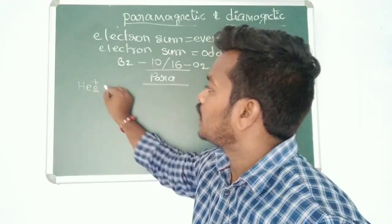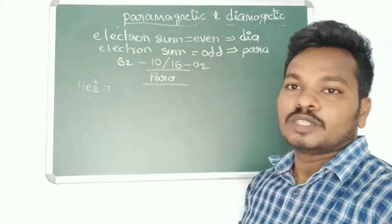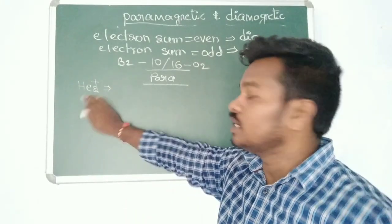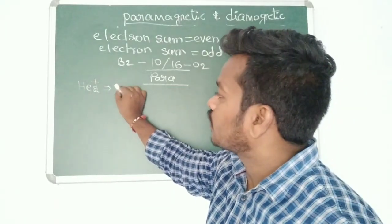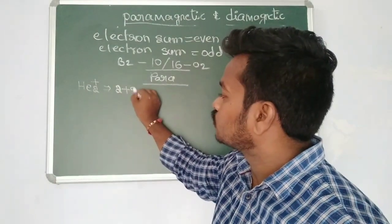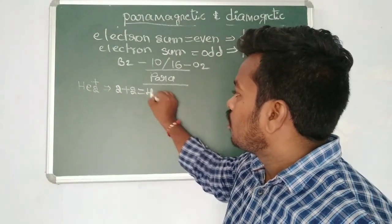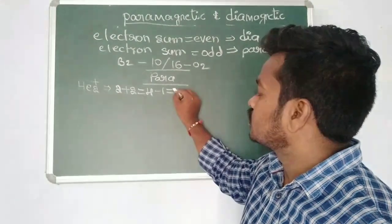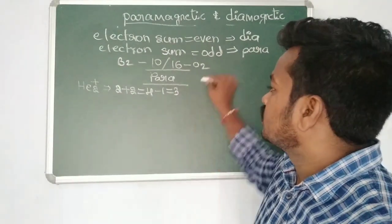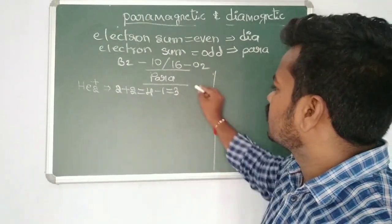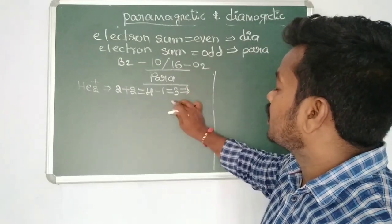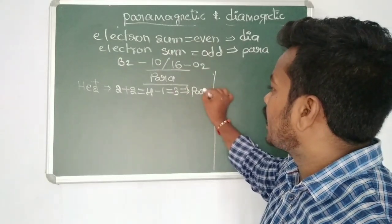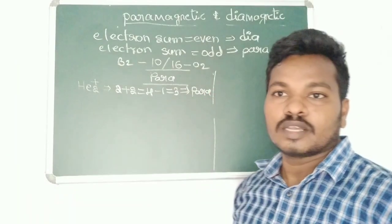Let's look at some examples. He₂⁺: helium has atomic number 2, so 2 + 2 = 4 electrons, but there is one positive charge, so subtract 1: 4 − 1 = 3 electrons. That is an odd number, so He₂⁺ shows paramagnetic nature.